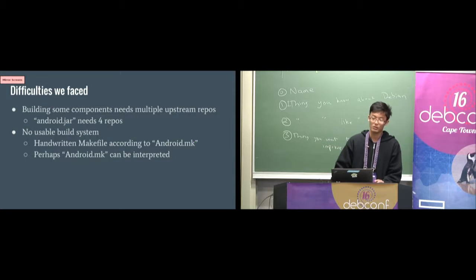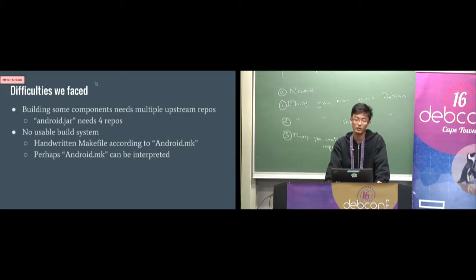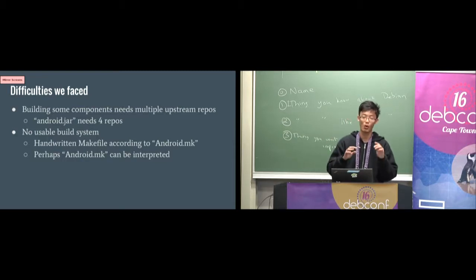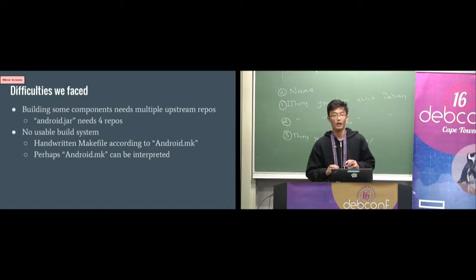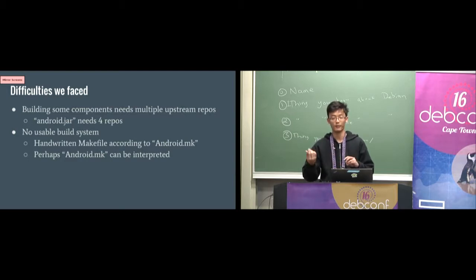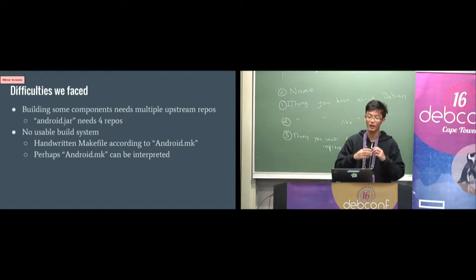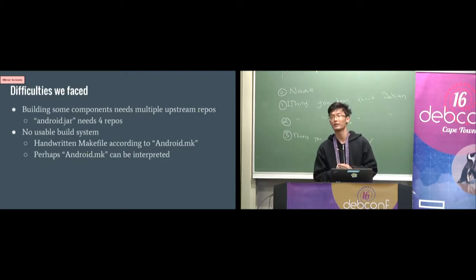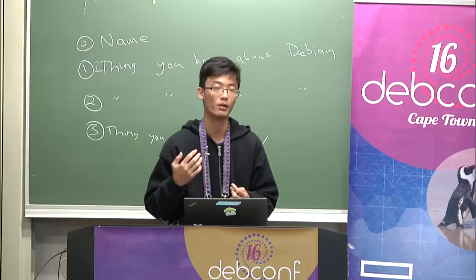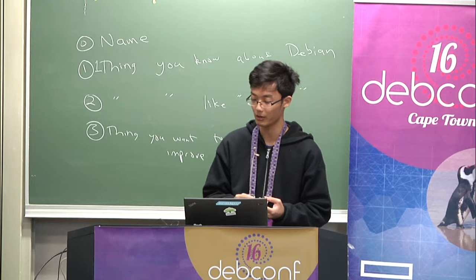There are also difficulties with the Android source code not having a usable small build system. It has Android.mk in every directory, and we can only read Android.mk to hand-write the makefile to compile the libraries. Since it is handwritten, it's error-prone and needs too much effort. Perhaps in the future we can develop some script to interpret Android.mk and automatically generate the makefiles.